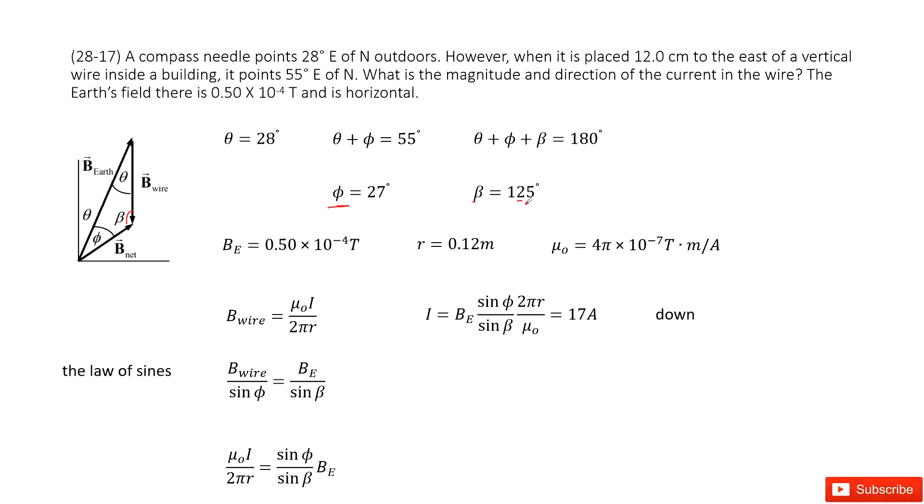Now in this triangle, the BE, the Earth's magnetic field, is given, and all the angles are given. What you need is the magnetic field for the wire.